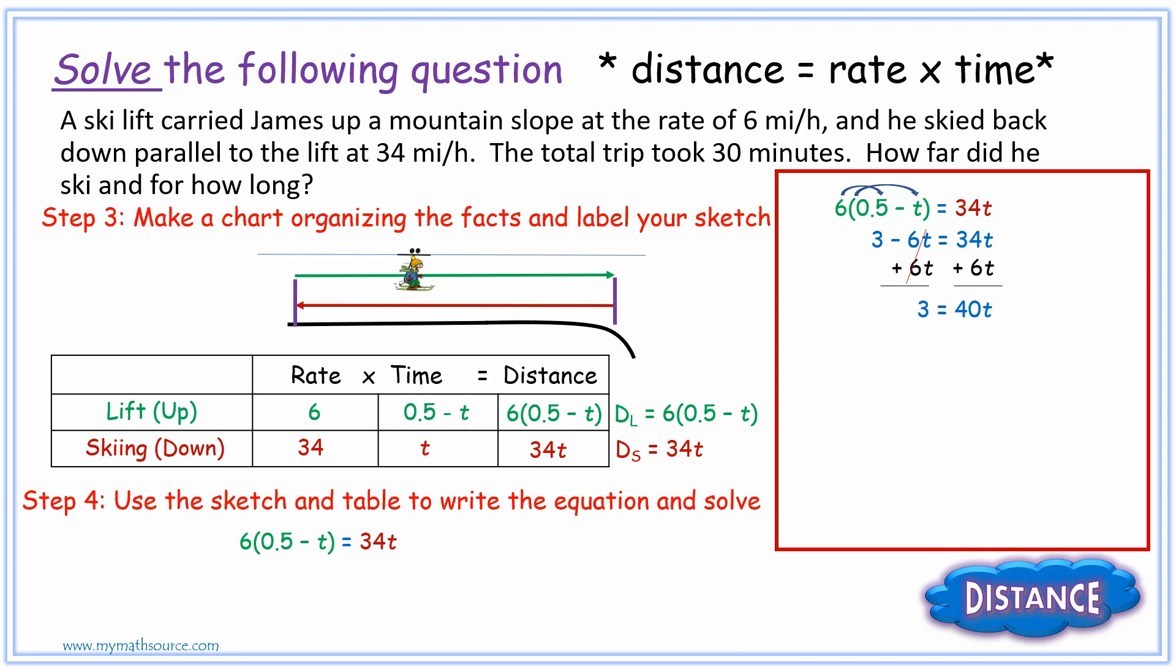Now we want T by itself. So we want to divide because that's the opposite operation. So we're going to divide by the same number. And what you do on one side of the equation, do to the other. And so 40 divided by 40 is equal to just T itself. So we have T equals 3 over 40.